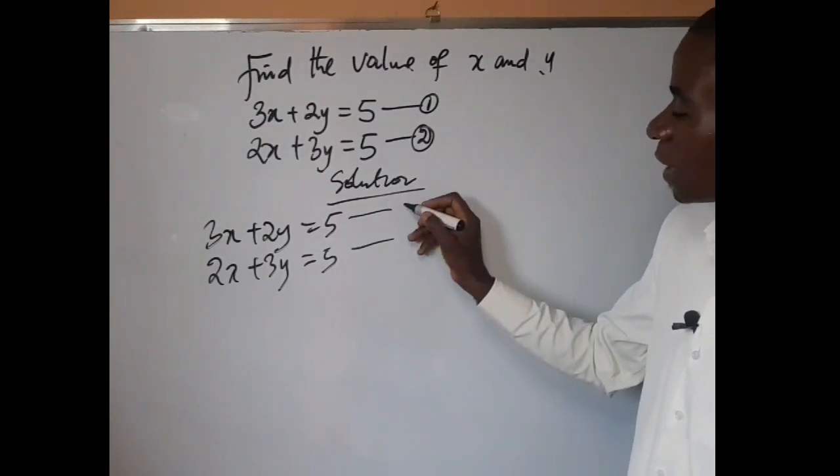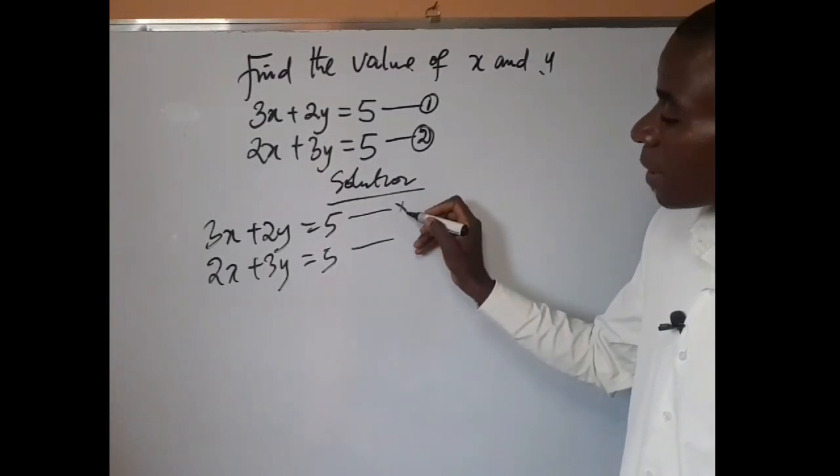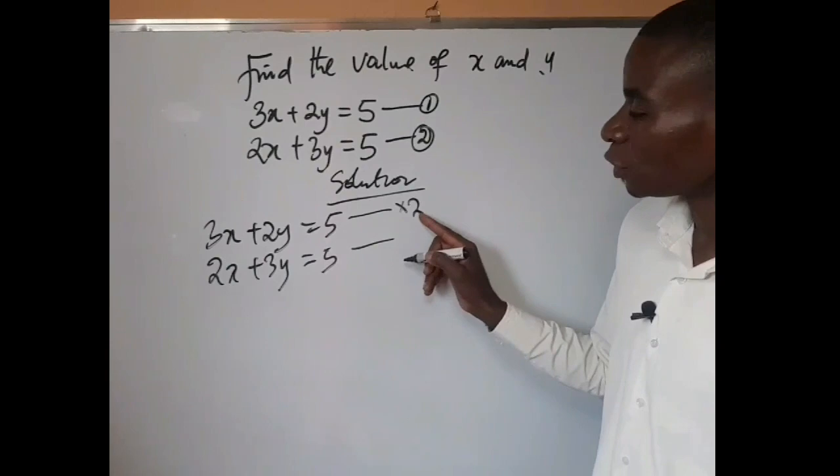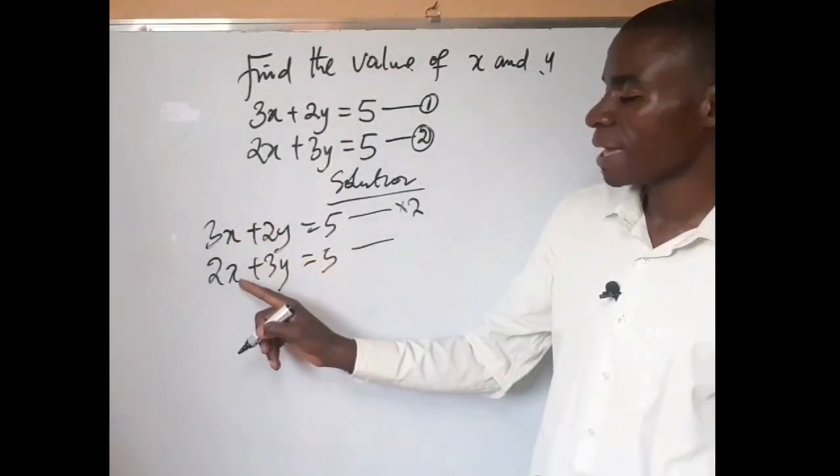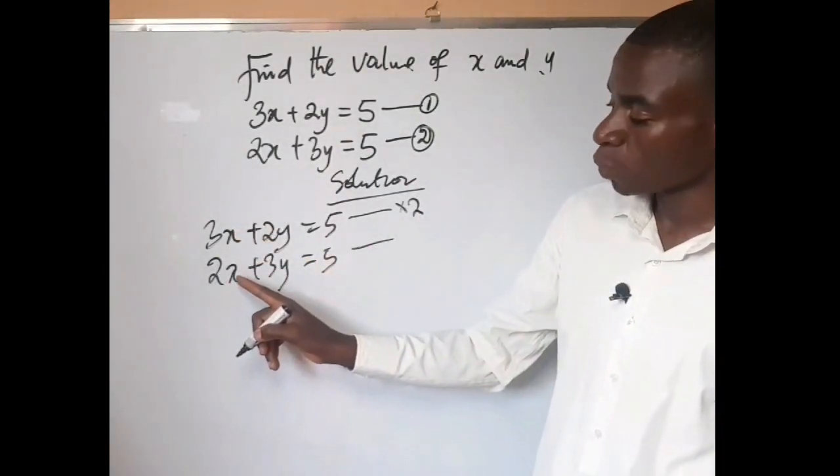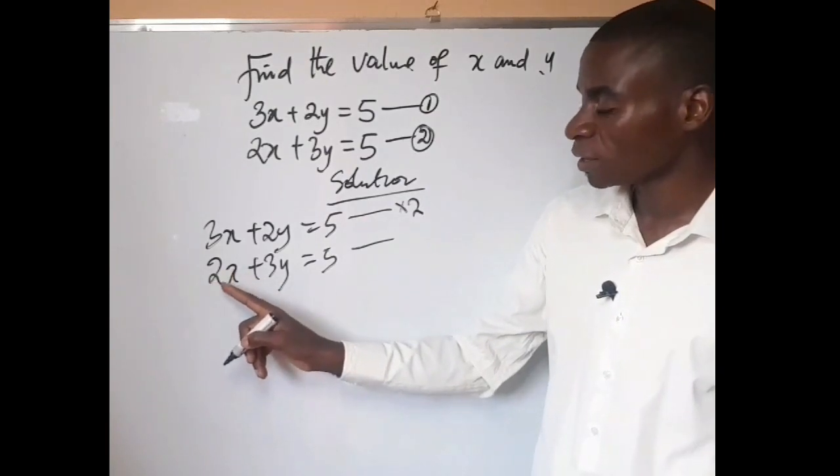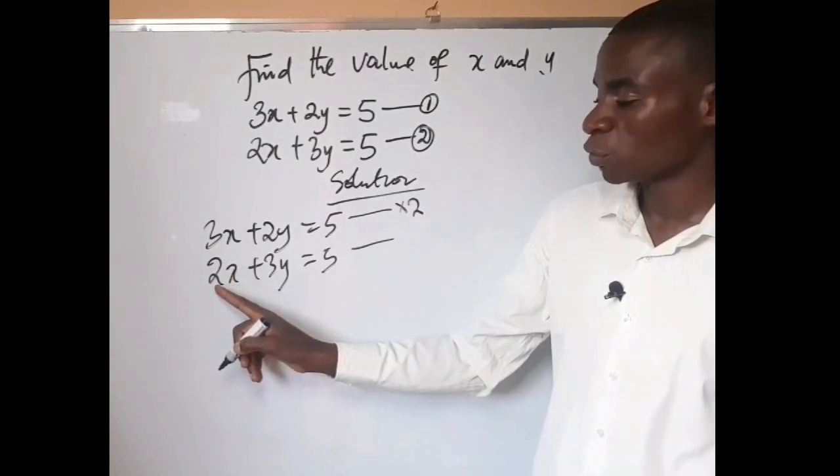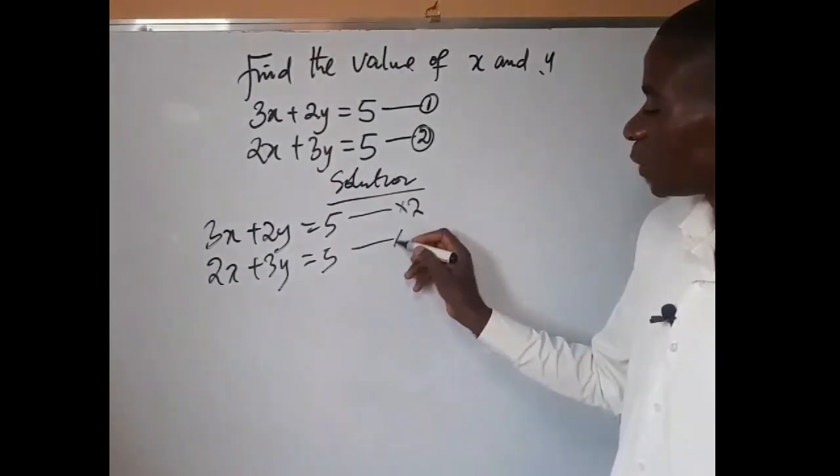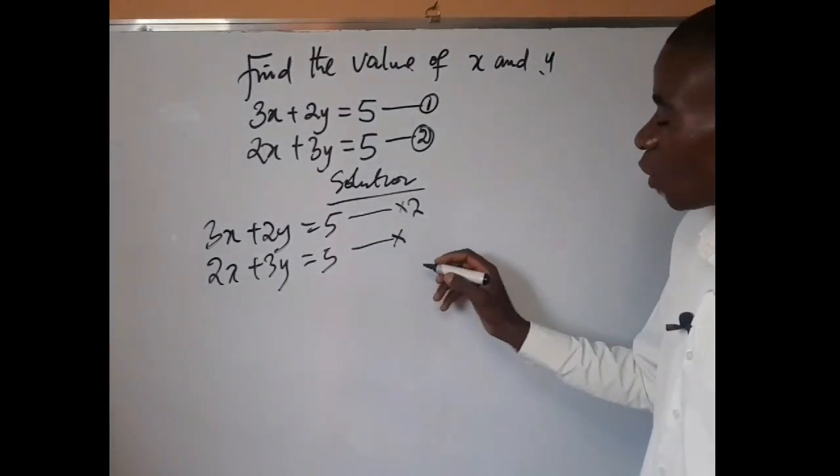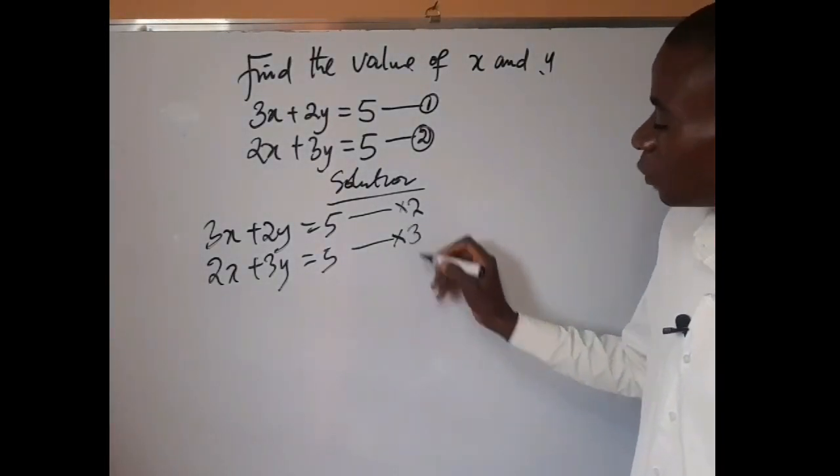We have to multiply equation 1 by 2. Why am I multiplying it by 2? Because I want to eliminate x. So I'll multiply equation 1 with the coefficient of x in equation 2, while I'll multiply equation 2 with the coefficient of x in equation 1, which happens to be 3.